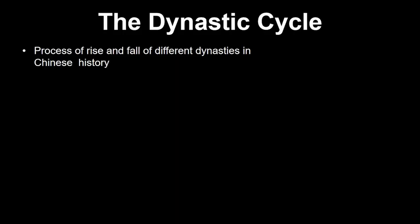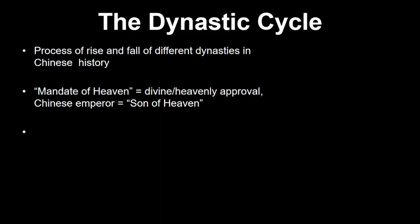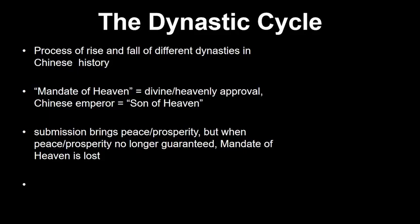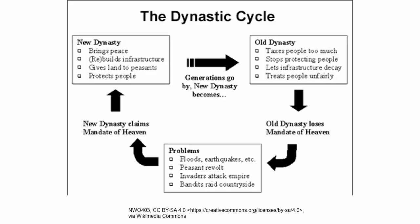Our next key term is the dynastic cycle — the process of the rise and fall of different dynasties in China throughout history. A key concept is the mandate of heaven, basically approval from heaven or the cosmos that Chinese emperors used to maintain and justify their rule. The Chinese emperors were referred to as the Son of Heaven and represented the divine on earth. If people submit to the emperor's authority, there will be peace and prosperity. But when a dynasty declines and rebellions occur, that dynasty has lost the mandate of heaven, and a new dynasty rises — and then the cycle repeats.